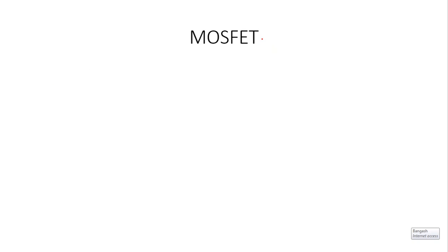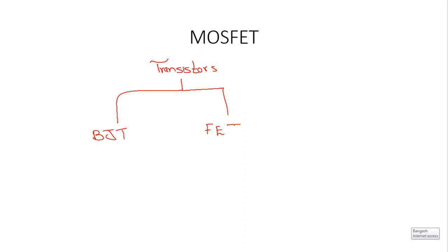Bismillahirrahmanirrahim, Assalamu Alaikum, welcome to Technically Explained. In the previous lectures we studied junction field effect transistors, which was one type of field effect transistor. In this video we are going to start with MOSFET. We said earlier that we have two important types of transistors: one is the bipolar junction transistor, and the second is the field effect transistor. There are three types of field effect transistors: one is the junction field effect transistor.